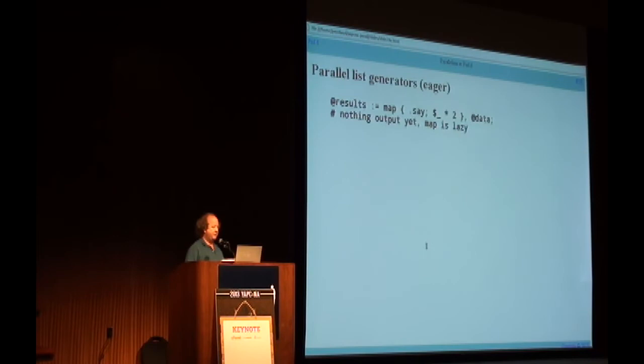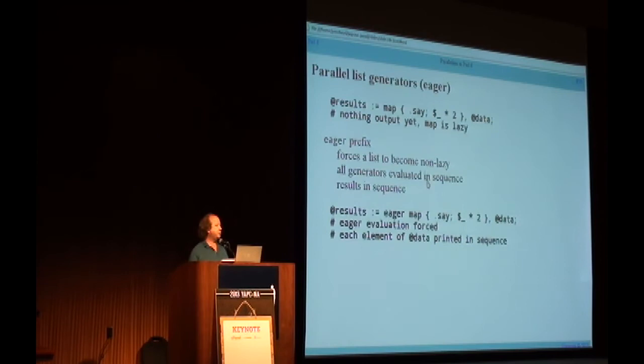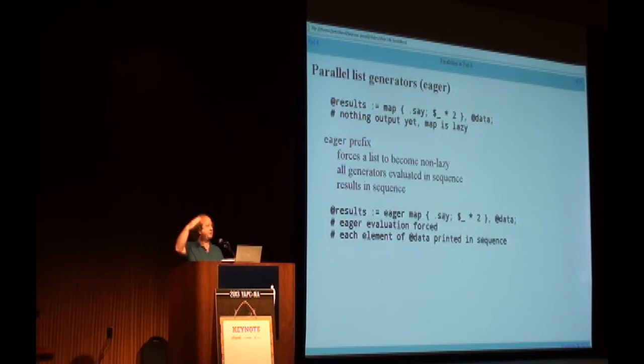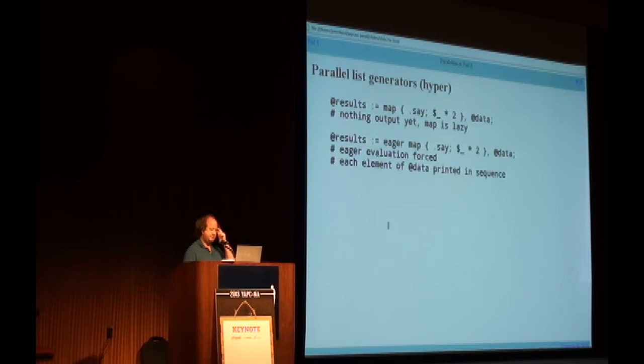Sometimes you don't want to wait. You can use the eager prefix to force immediate evaluation. If you prefix the map expression with eager, it causes the list to be evaluated eagerly, exhausting all elements of @data and storing them in @results before the statement finishes. That's still sequential, but eager is the appropriate stepping stone to understand the next construct.